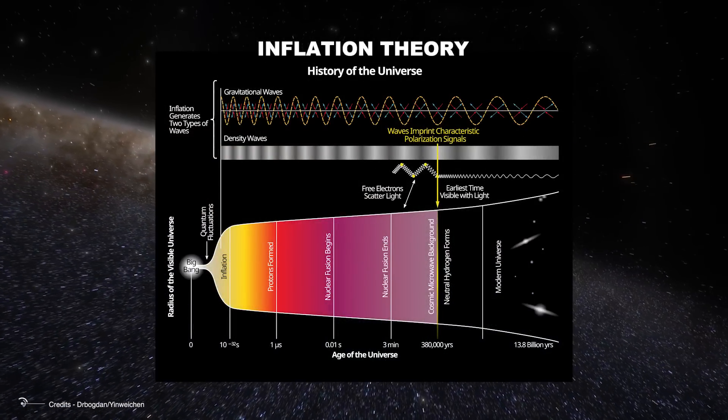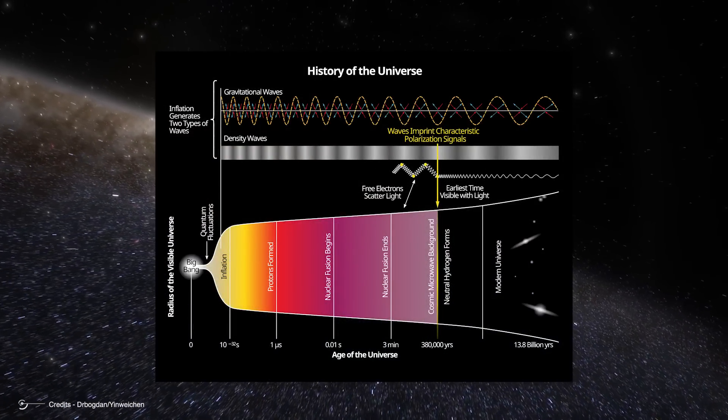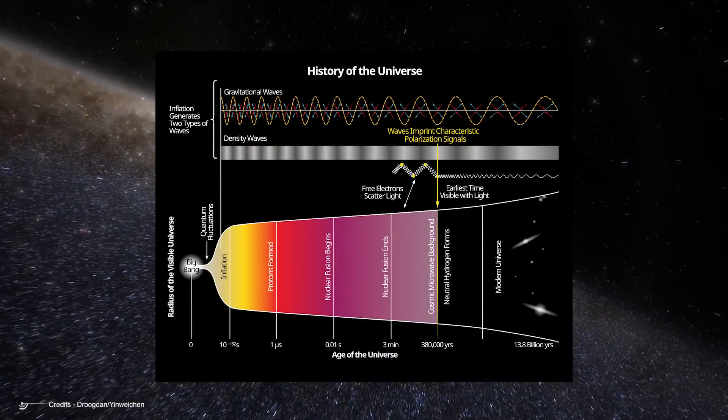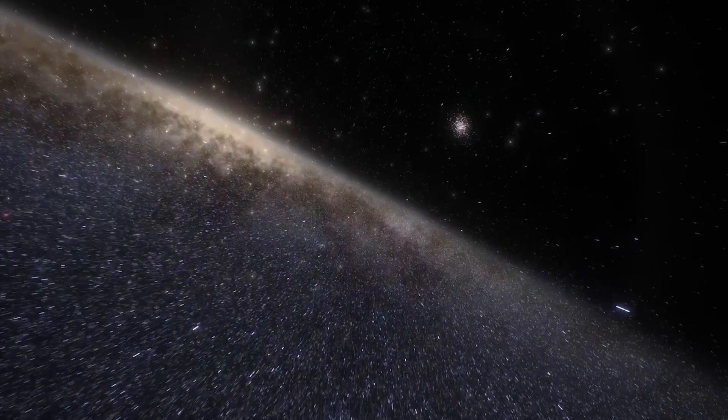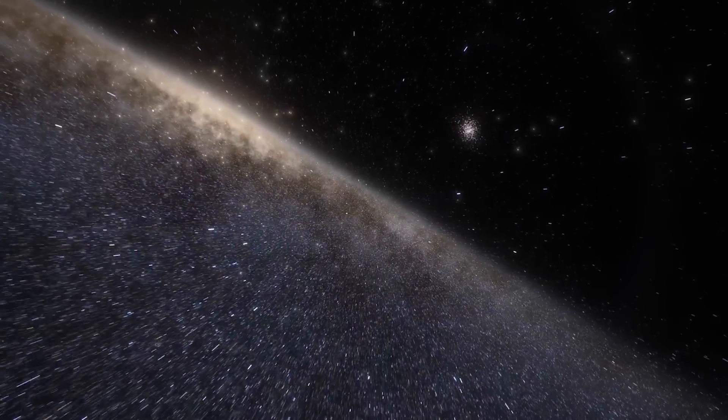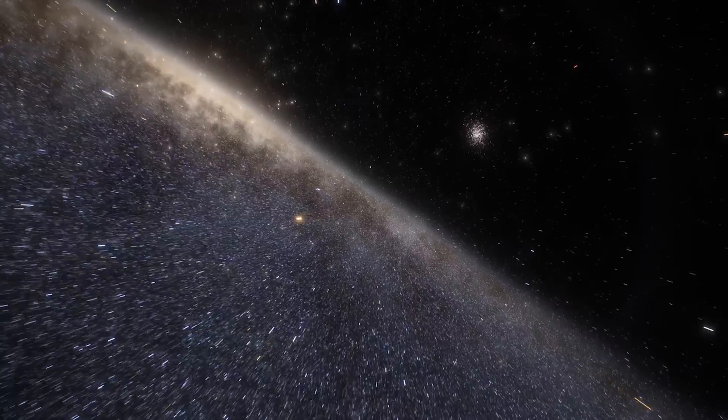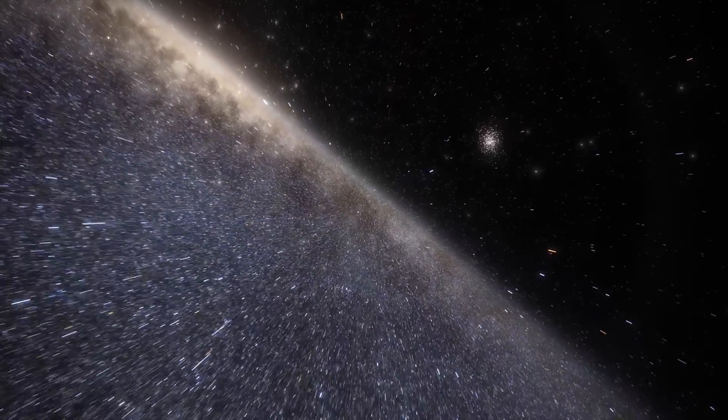Inflation theory proposes that the universe underwent a rapid exponential expansion in the first fraction of a second after the Big Bang. During this brief period, existing light and heat were stretched across the universe, allowing them to propagate evenly.